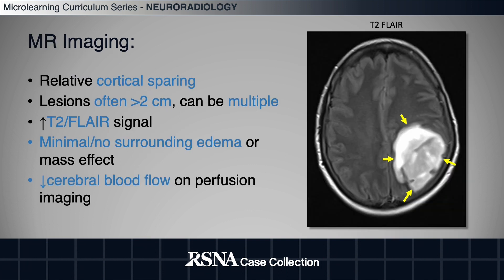Lesions on MRI show relative cortical sparing, are often greater than 2 centimeters and can be multiple, have increased T2 FLAIR signal with minimal to no surrounding edema or mass effect, and decreased cerebral blood flow on perfusion imaging.